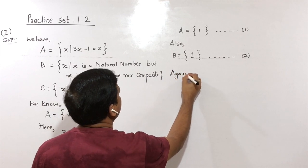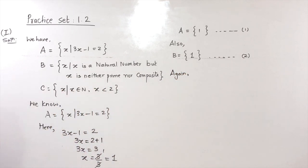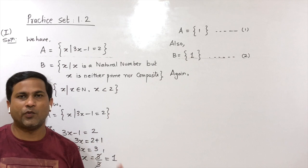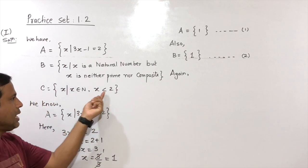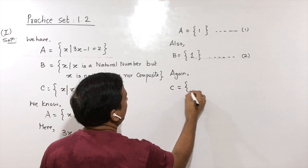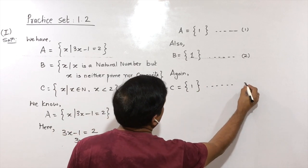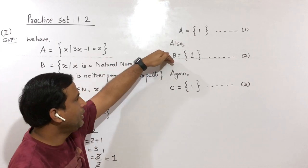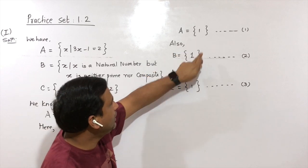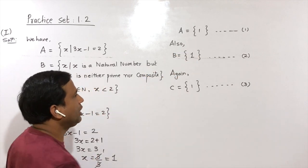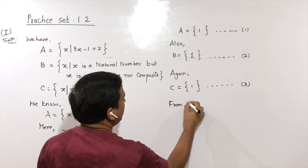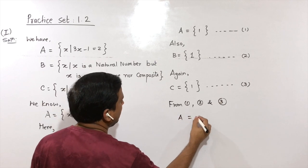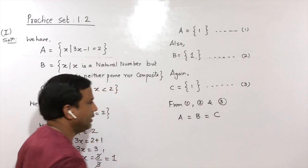For set C: writing in listing method, it says X belongs to natural numbers and X is less than 2. Natural numbers start from 1, and the only natural number less than 2 is 1, so set C = {1}. This is statement number 3. Observing sets A, B, and C, exactly the same elements are present. From statements 1, 2, and 3, we conclude: set A = set B = set C.